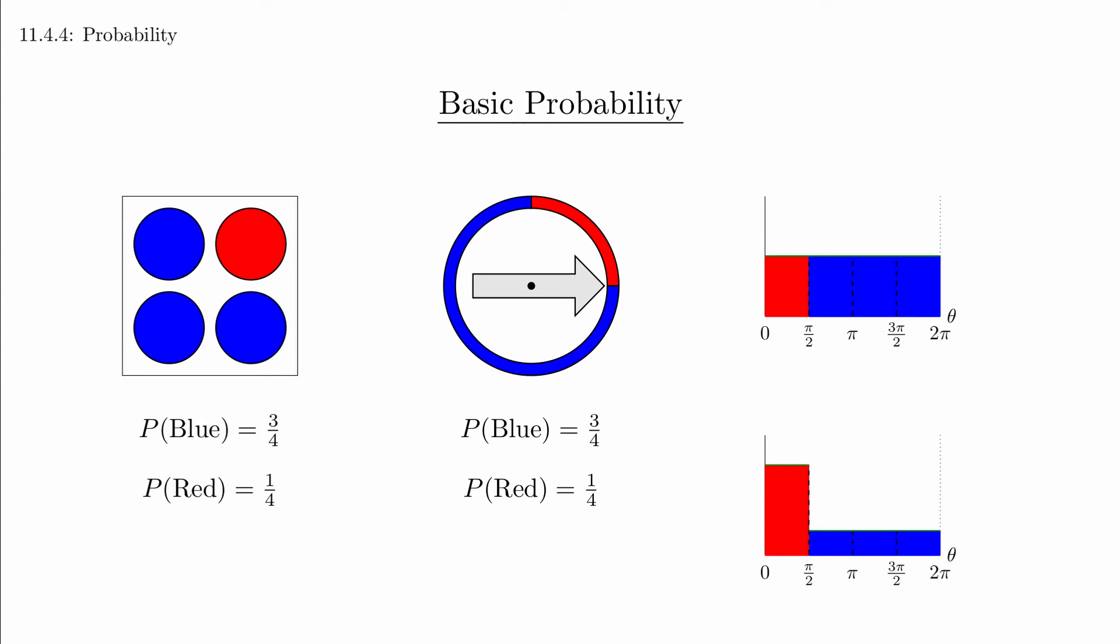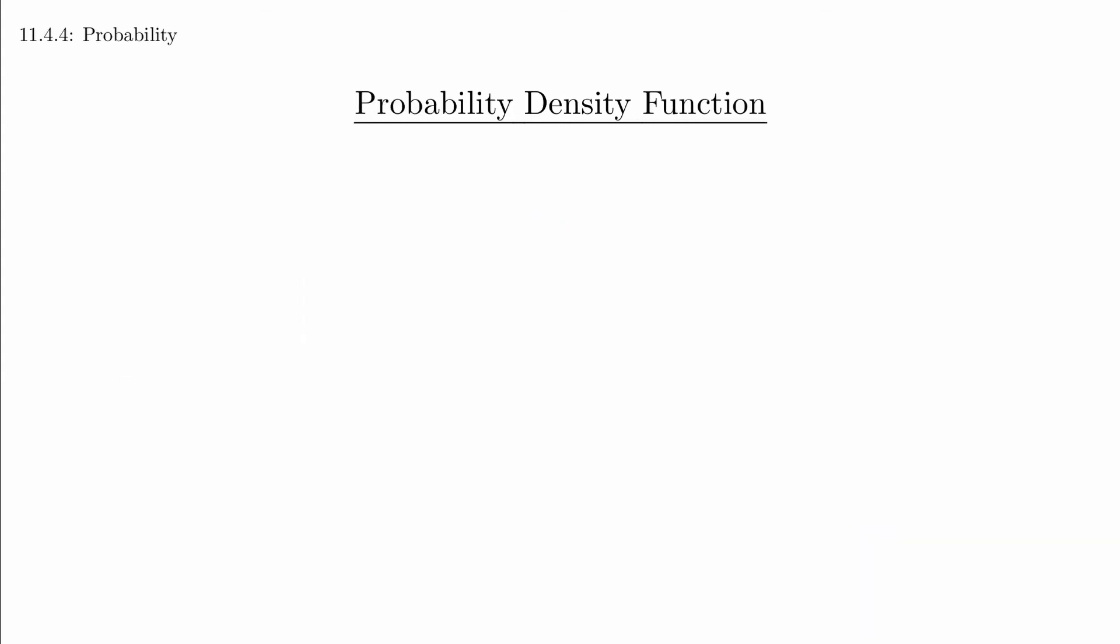The second example gives us the insight we need for this section. The function that gives the height of the rectangles is known as the probability density function. Let's take a look at the definition.